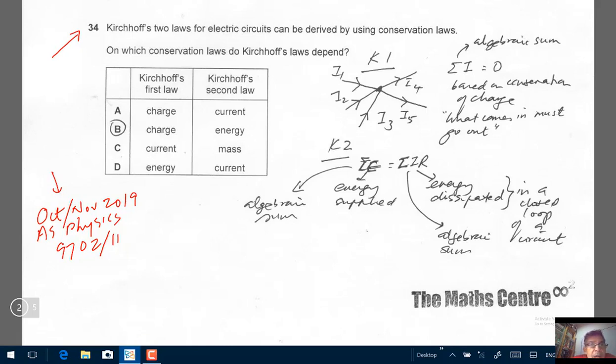The question reads like this: Kirchhoff's two laws for electric circuits can be derived by using conservation laws. On which conservation laws do Kirchhoff's laws depend? Now this one you should know straight off—you don't need to do any thinking about this.